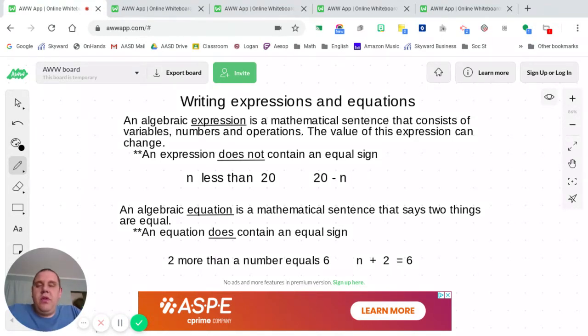Look at the example of our equation below. Two more than a number equals six. We know that more than is a key word for addition. So two more than a number, you're going to add two and a variable. And then it says equals six. So you just literally write an equal sign, six. So n plus two or two plus n, doesn't matter with addition, equals six.